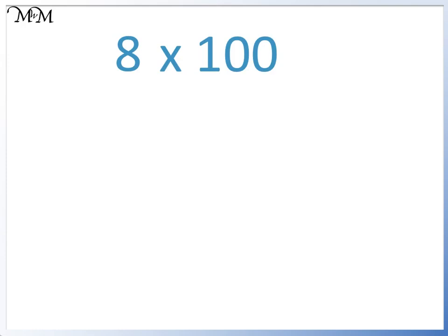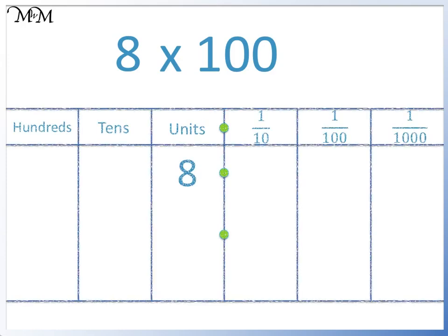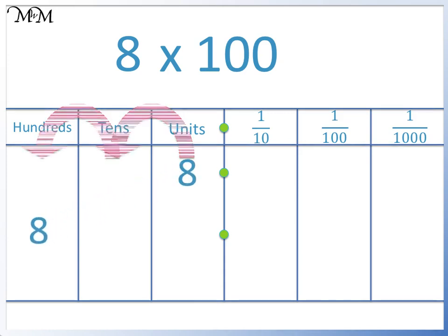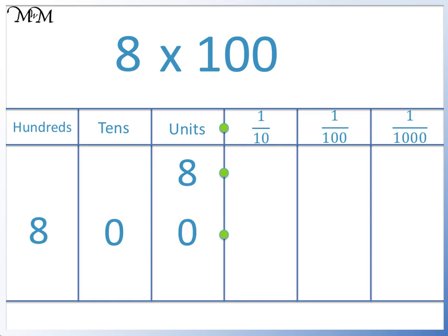For example, 8 times 100. We can begin by putting 8 on a place value grid. We are multiplying by 100, so we move 8 two places to the left. We have moved the 8 to the hundreds column. Because there are spaces in the tens and units columns, we write a zero in each column. 8 times 100 equals 800.